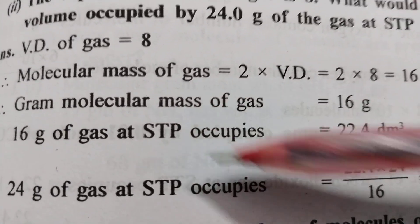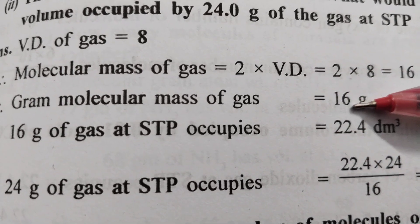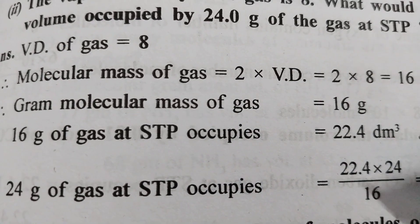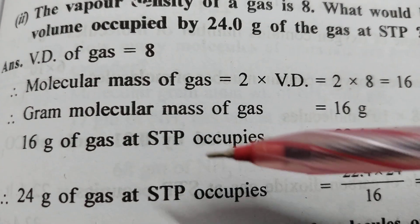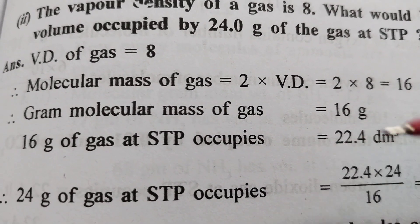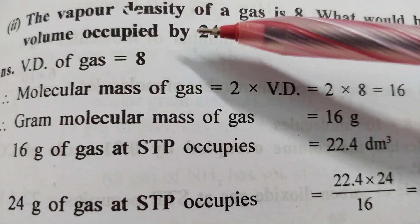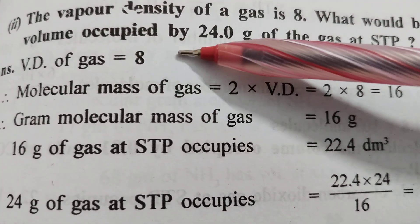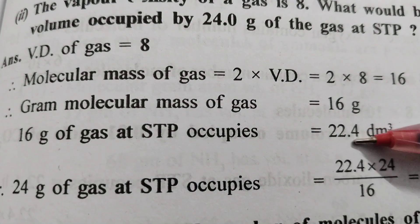This is the standard: if you know the molar mass of any gas, that gas occupies 22.4 decimetre cube at STP. So 16 grams of gas at STP occupies 22.4 dm³ — this is the standard value. Now the question asks for the volume occupied by 24 grams.